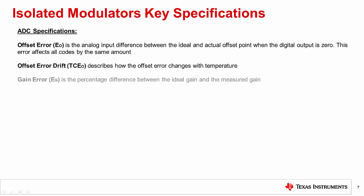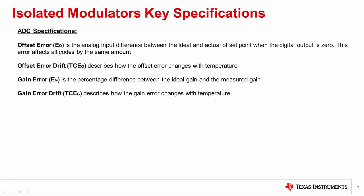Next is gain error, which is the percentage difference between the ideal gain and the measured gain. To describe the changes in gain over temperature, the gain error drift parameter is used.